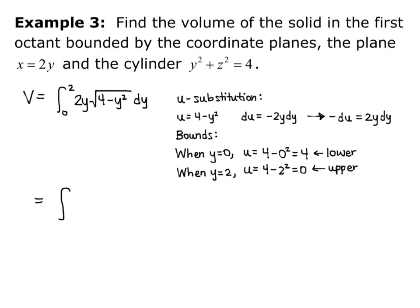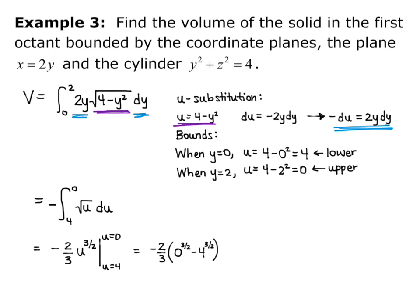So my volume is going to be the integral from 4 to 0 of square root of u times negative du. So remember my u was the 4 minus y squared, that's where I got the square root of u. Negative du, because I had negative du replaces the 2y dy. And I just integrate. So negative 2 thirds u to the 3 halves evaluated from u equals 4 to u equals 0. So negative 2 thirds times 0 to the 3 halves minus 4 to the 3 halves. And that gives me 16 thirds. It's a volume, so I set it to be cubic units.